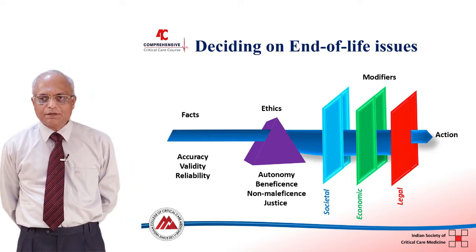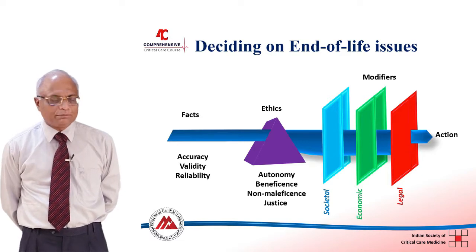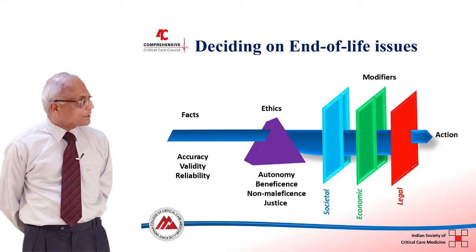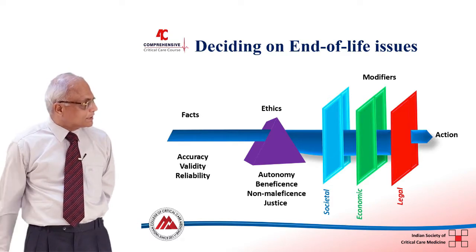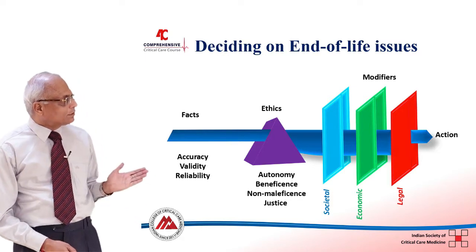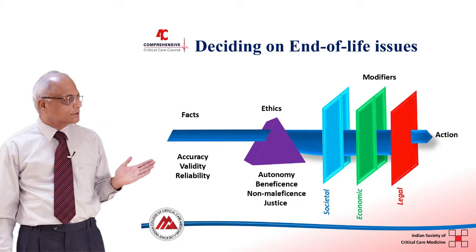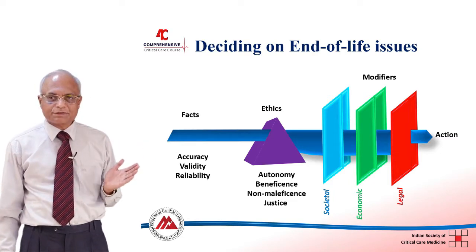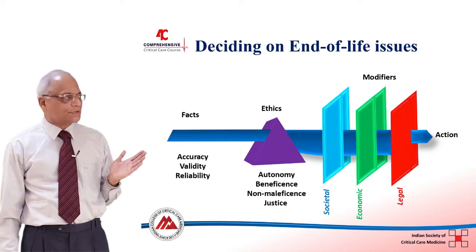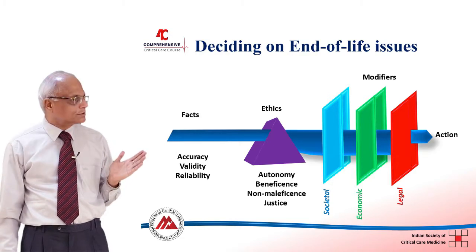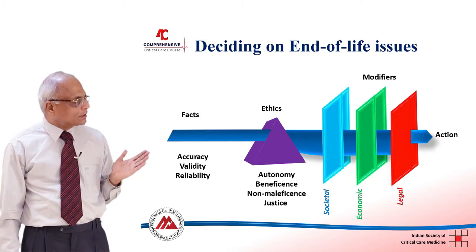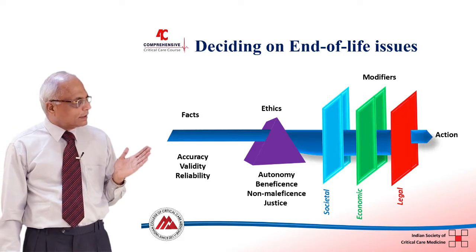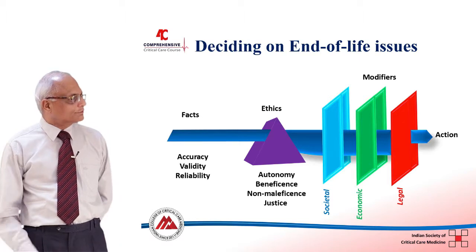End-of-life care decision is an interface between medical aspects, ethical aspects, legal aspects, and also the social aspects of such decision making. We first need accuracy, validity, and reliability of diagnosis and the facts of the case. This then goes through the prism of the three principles of ethics — autonomy, beneficence, non-maleficence, and social justice — and there are modifiers or barriers to decision making in the form of societal and cultural issues, economic considerations, and legal framework, all of which contribute to the final decision making.